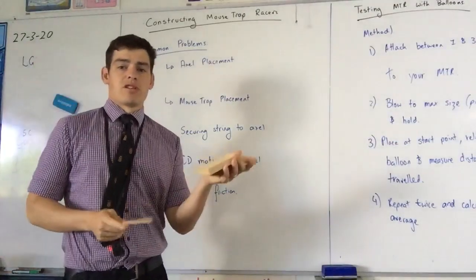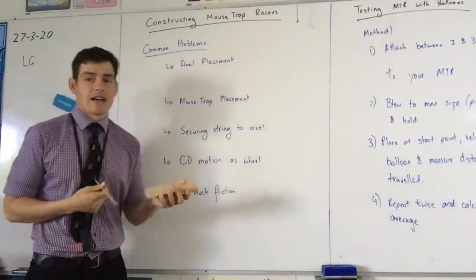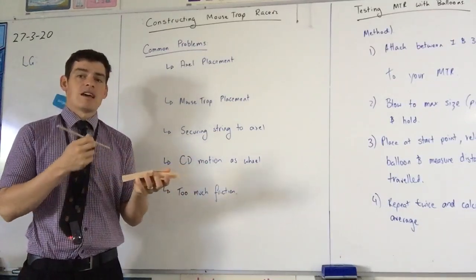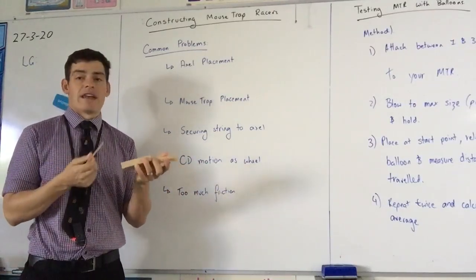So I'm going to talk about some of the things that we commonly find students do not do properly. So let's say this is my mousetrap racer. One of the most common errors we see is axle placement. You need to be really clear about where your mousetrap is and how it can access your axles.